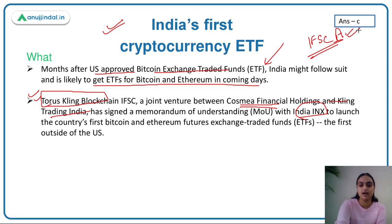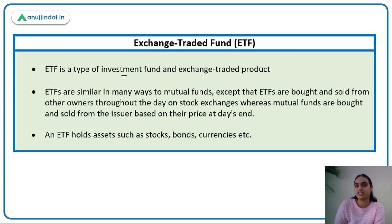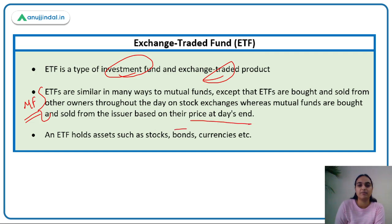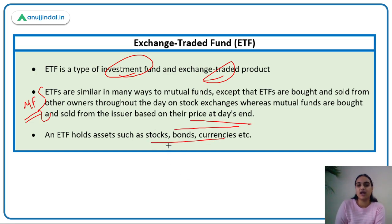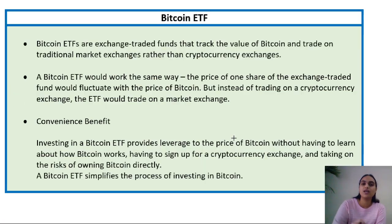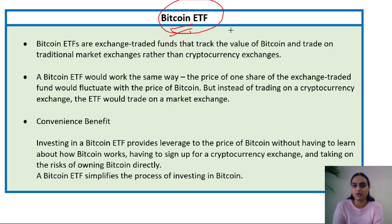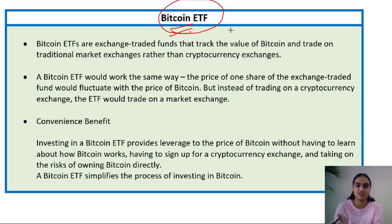Moving ahead to ETFs: we've discussed it's an investment fund traded on the exchange. Mutual funds can be bought at day-end price, whereas ETFs are traded throughout the day on stock exchanges and also have underlying assets like stocks, bonds, and currencies. Now we are thinking of introducing Bitcoin ETFs as well. A Bitcoin ETF is basically an indirect way of investing in Bitcoin — you don't need to directly buy Bitcoin on a crypto exchange. Instead, the Bitcoin ETF will be traded on traditional market exchanges like NSE or BSE.